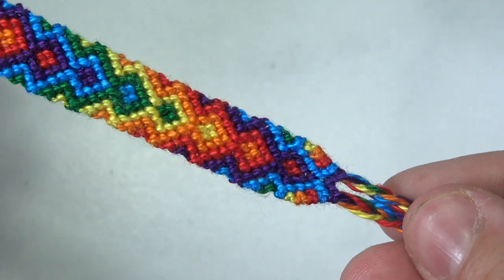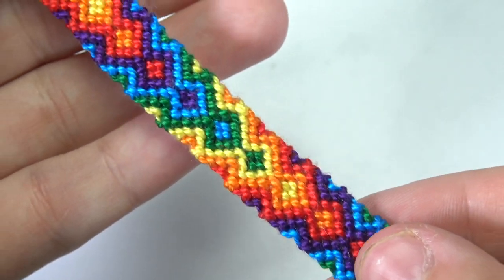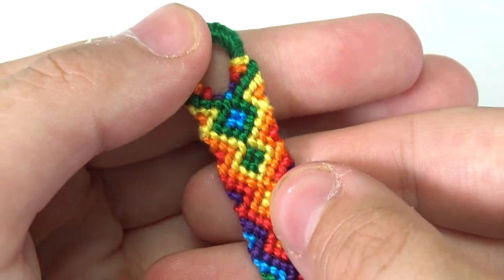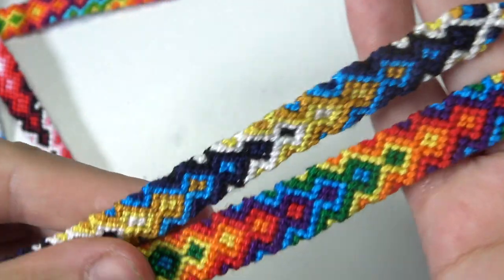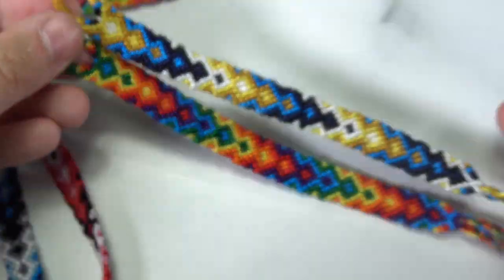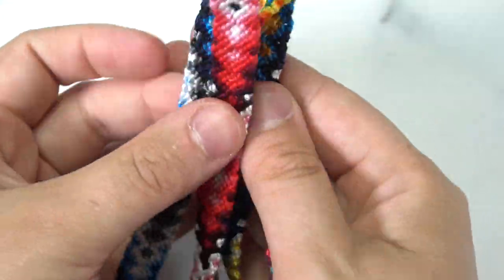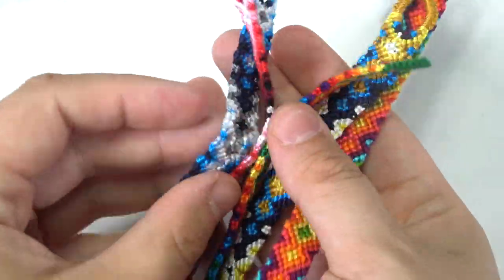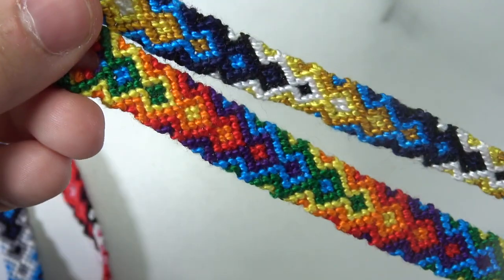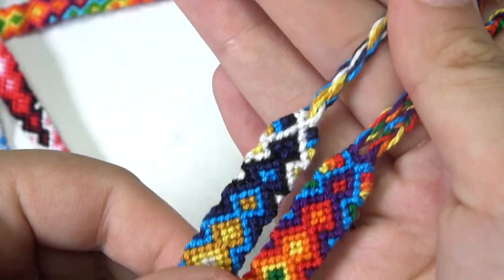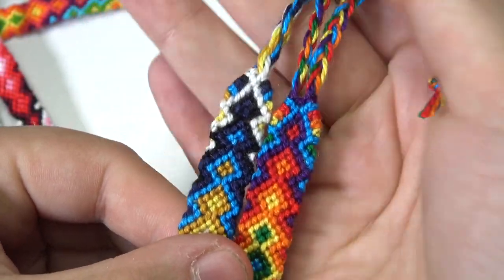And I will also be linking down below how to make this beautiful arrowhead bracelet. Here are two examples of a triangle end and I cannot wait to show you guys how to make them. But before we get started, please hit a big thumbs up, subscribe to my channel, and let me know if there is anything you would like to see me make.